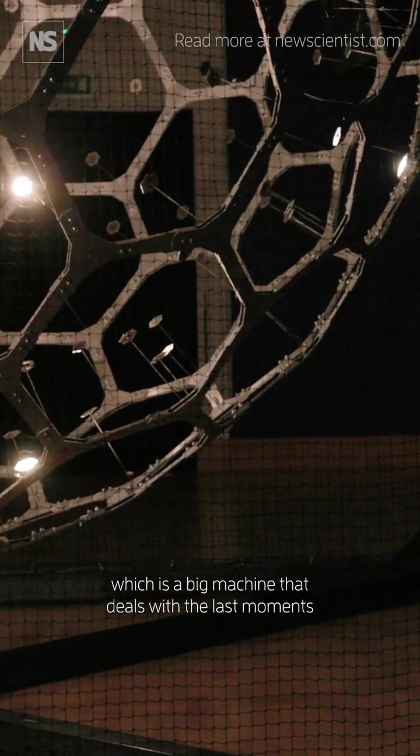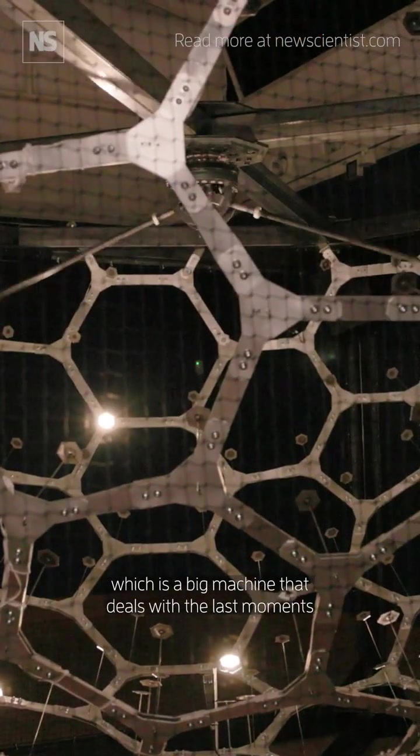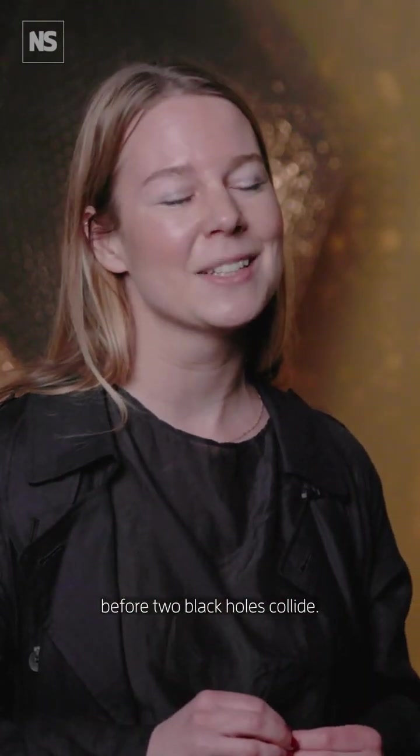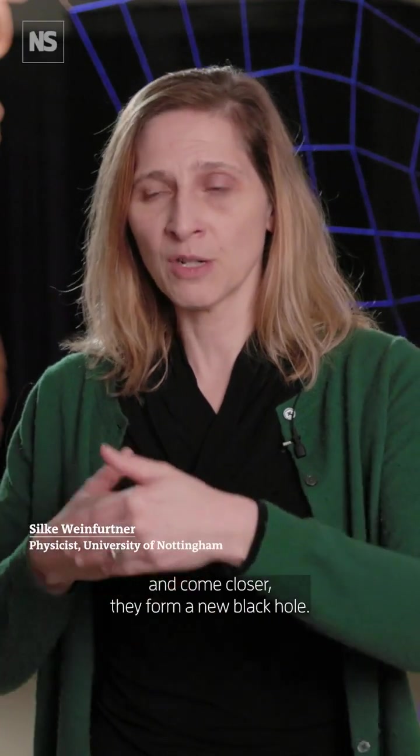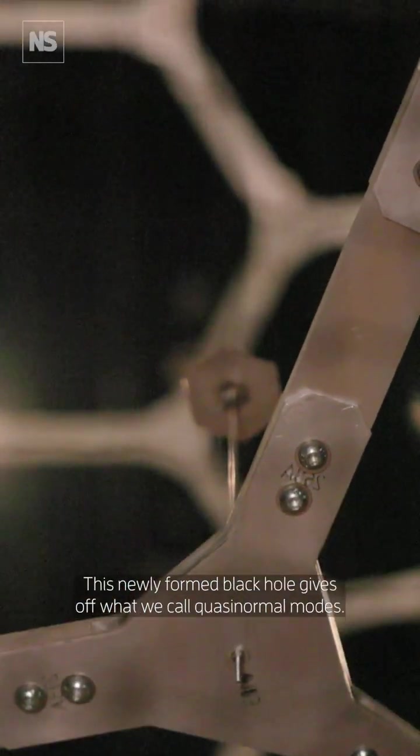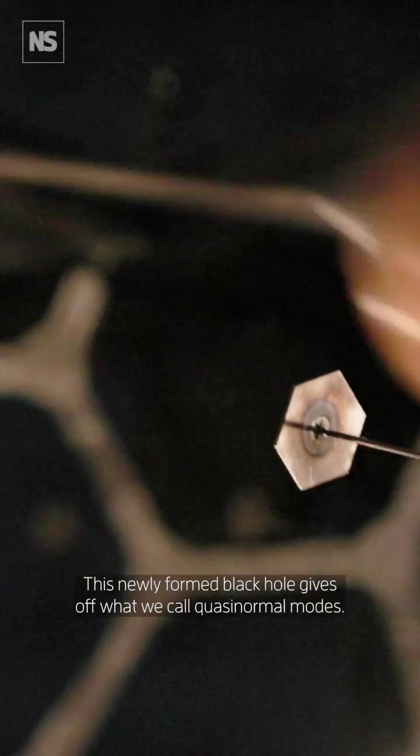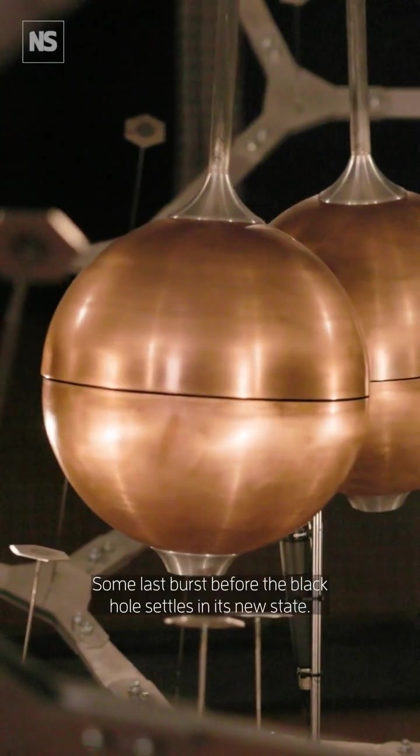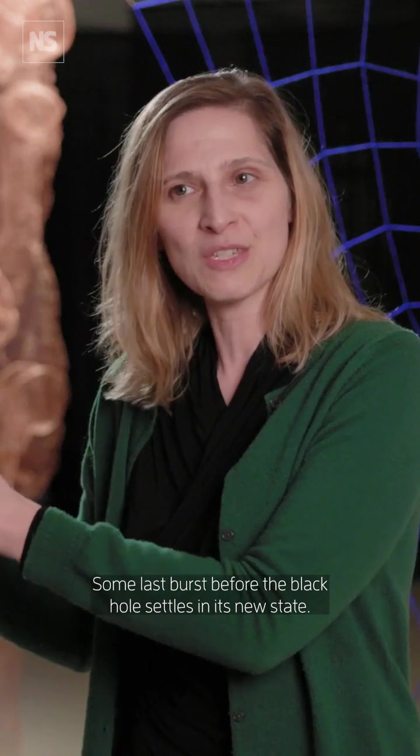which is a big machine that deals with the last moments before two black holes collide. When two black holes inspiral and come closer, they form a new black hole. This newly formed black hole gives off what we call quasi-normal modes, some last bursts before the black hole settles in its new state.